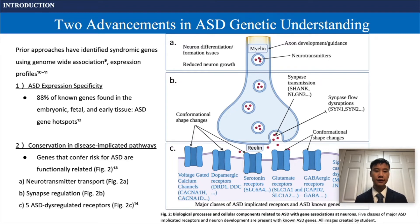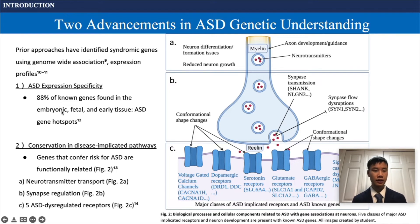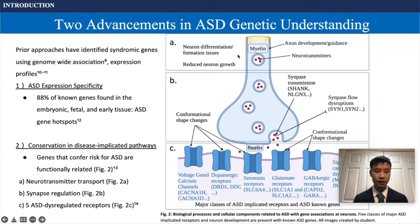Prior approaches have tried to identify syndromic genes using genome-wide association and expression profiling. There have been two major advancements in autism genetic understanding. Firstly, there is high autism expression specificity, as 88% of the known genes have been found in early developmental tissue. Autism genes also have high conservation in disease-implicated pathways, meaning genes that confer risk for autism are functionally related. The three major biological processes involved are neurotransmitter transport (C2A), synapse regulation (C2B), and five classes of autism dysregulated receptors (C2C).